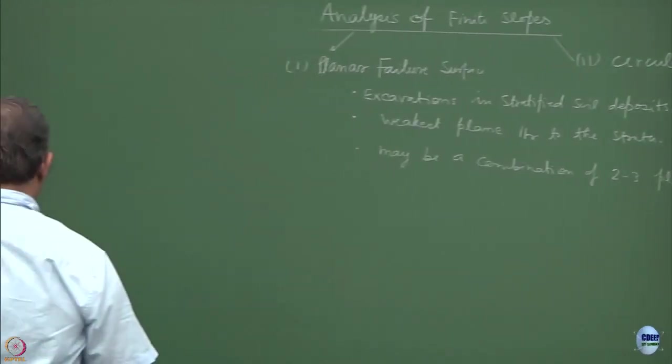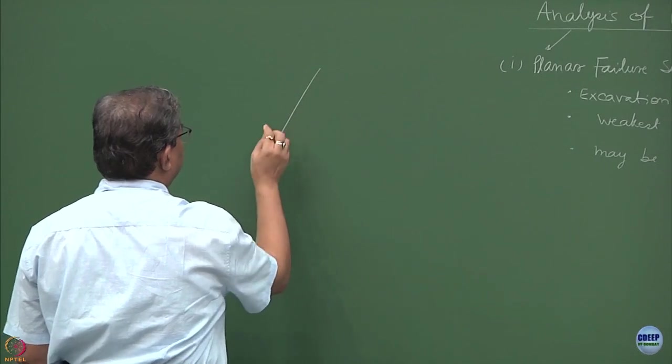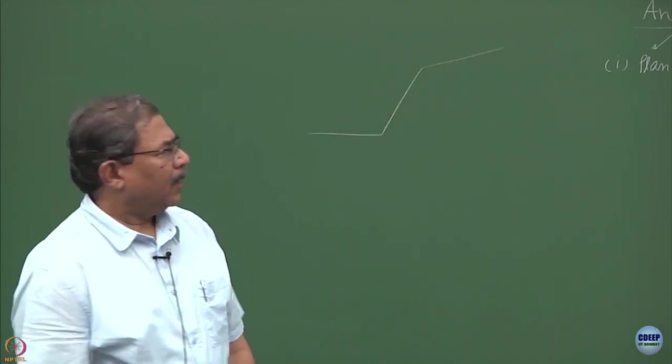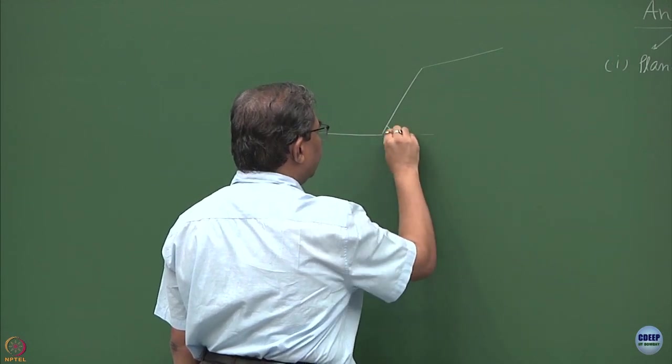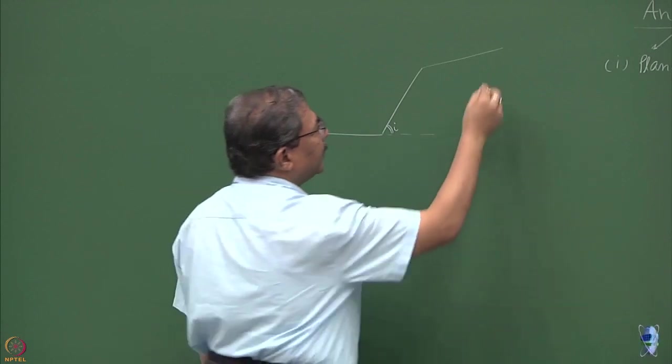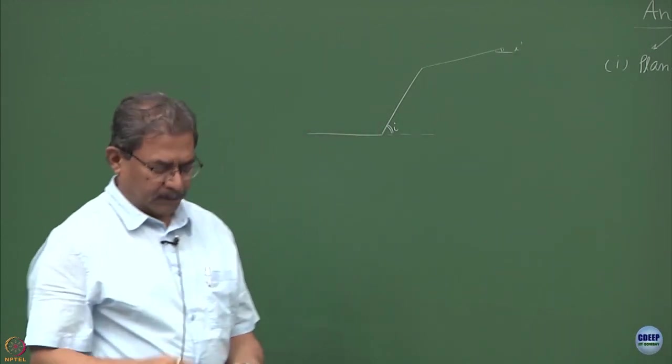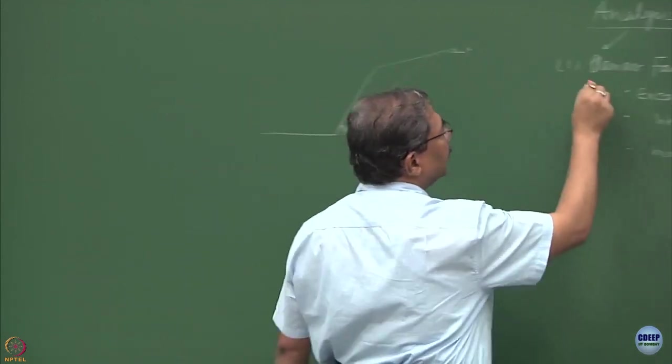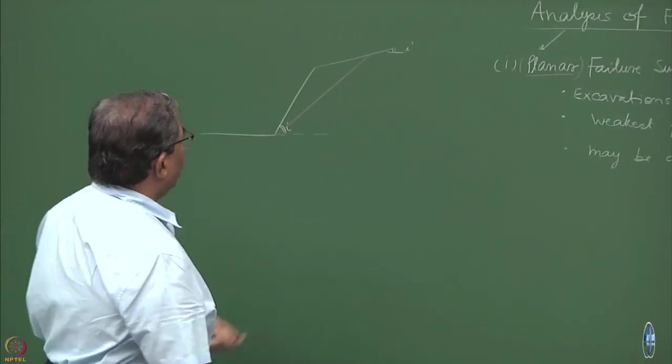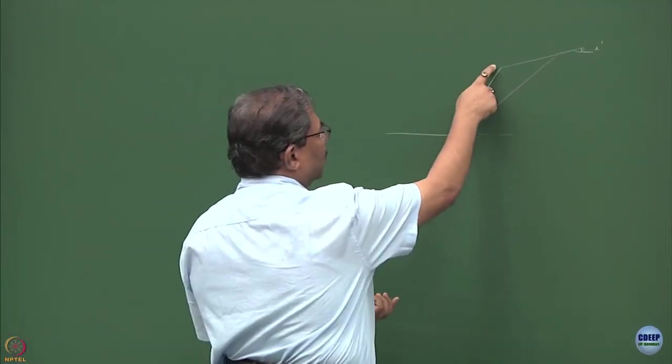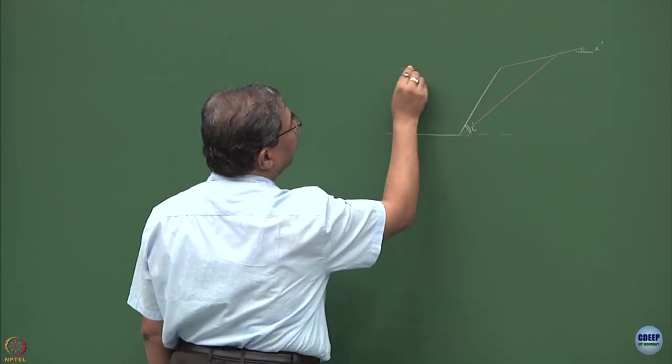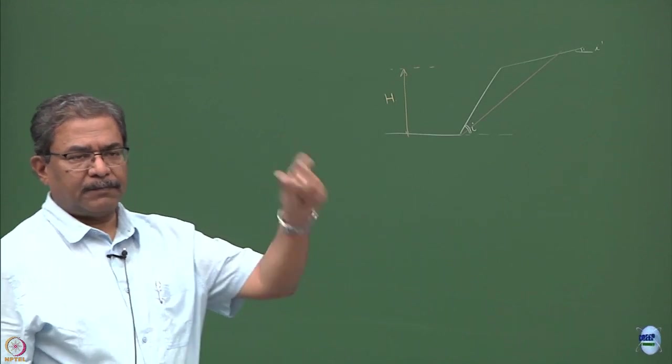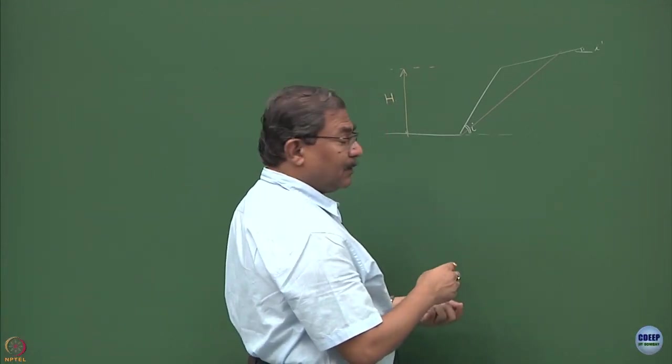One example of this type of situation would be if I consider a slope, this is a natural soil mass. This is of inclination i and the backfill here is of i prime. This is the inclination of the slip surface, the planar slip surface, of height H. So height is taken up to the topmost point over here. The inclination of the slip surface is assumed to be theta.